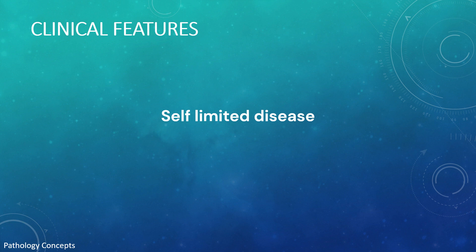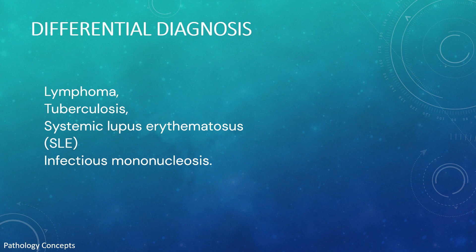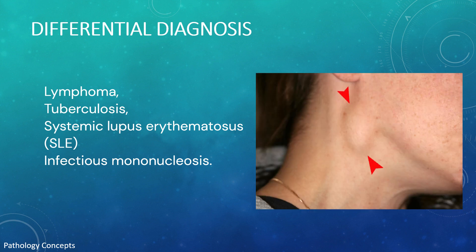Abnormal tissue growth and inflammation in KFD usually clears up spontaneously within a few weeks or months without further therapy, making it a self-limited disease. The differential diagnosis includes conditions that cause swollen lymph nodes, such as Burkitt's lymphoma, Hodgkin's lymphoma, tuberculosis, SLE, and infectious mononucleosis.